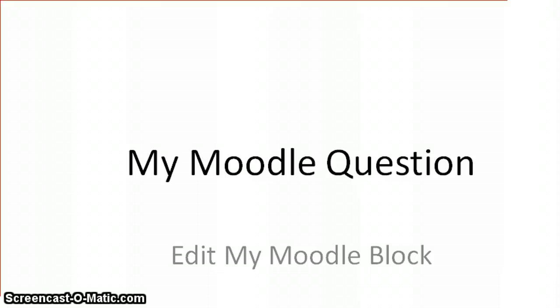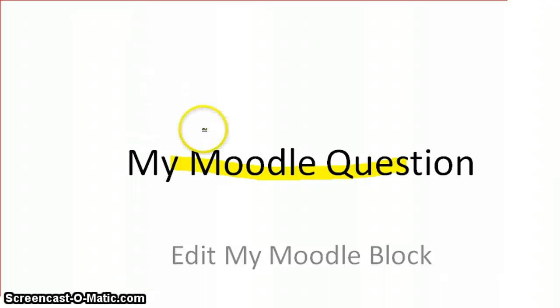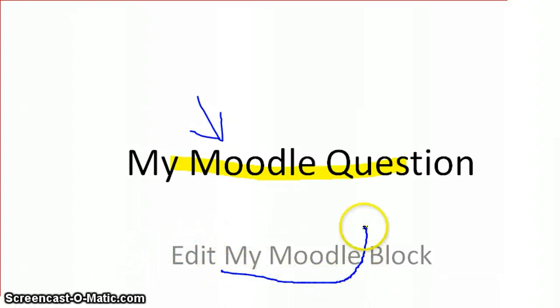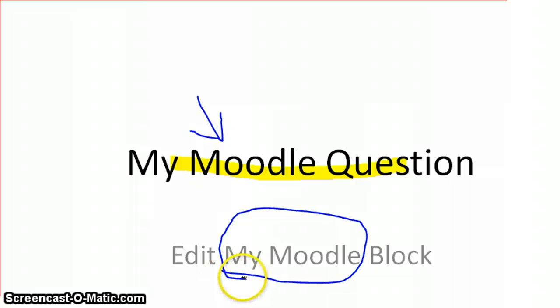I can then select a tool — a highlighter — and I can highlight things, or I can select a pen and draw arrows on it. So what I want to get at is editing the My Moodle block.